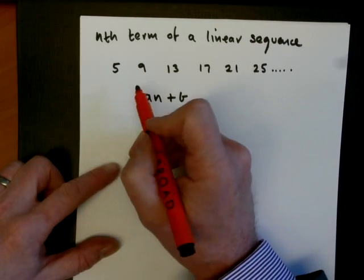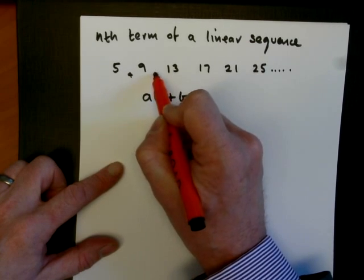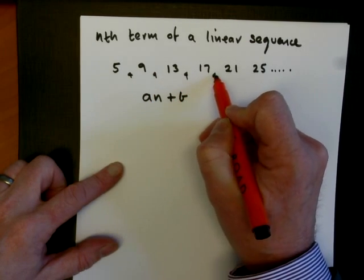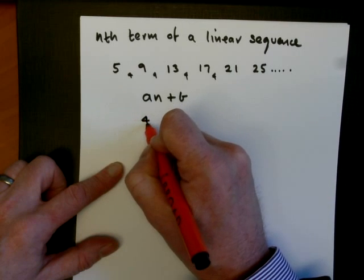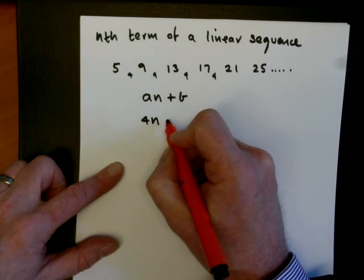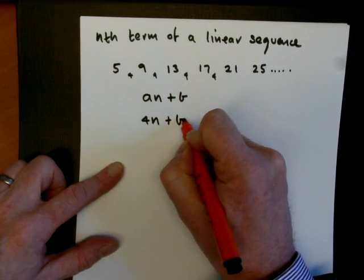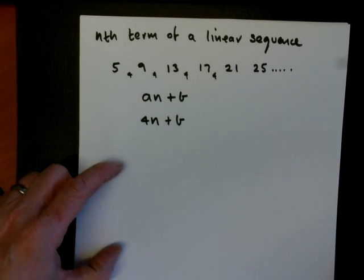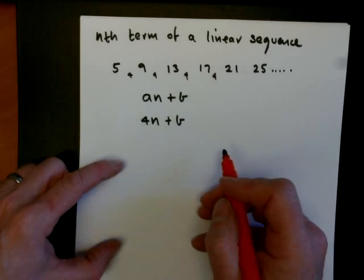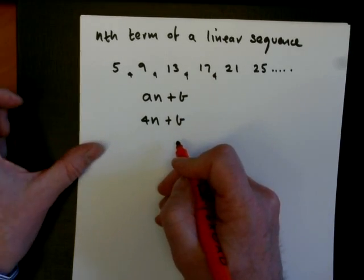And that's very easy. All we have to do is look at the differences. And the differences are 4, so we know the first number is 4. So we now are left with just having to find the b. I know my b looks a bit like a g, but that was the way I was taught to write it, and I've never been able to change it since then.